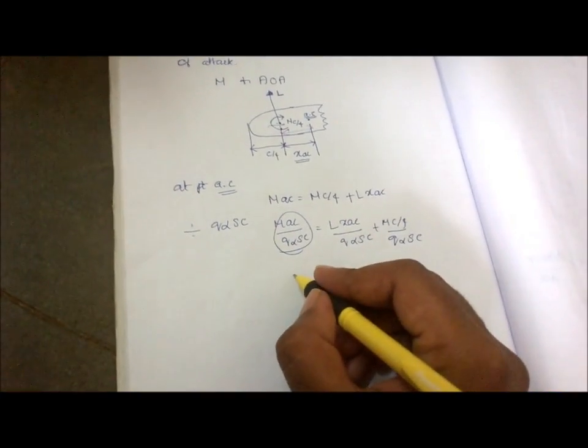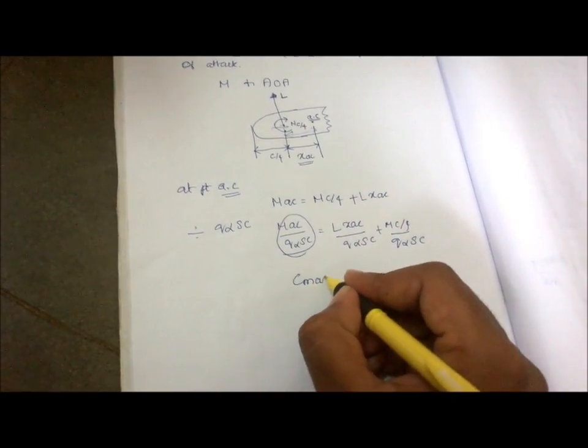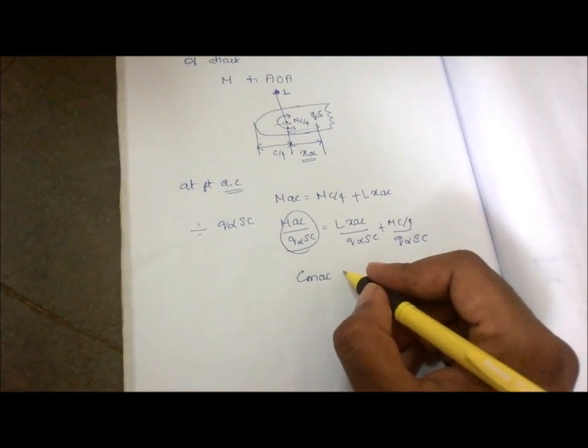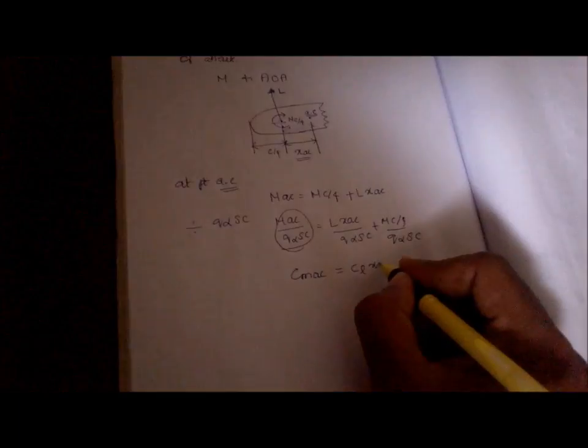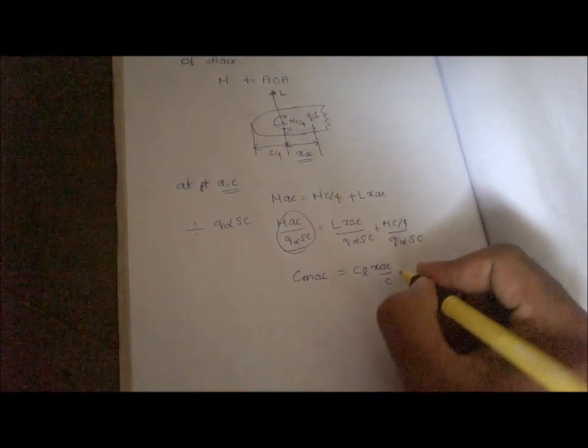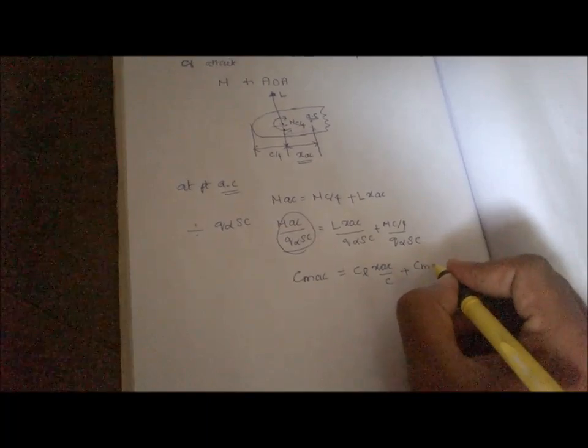This term can be written as coefficient of moment at the aerodynamic center which is equal to C_L times X_AC divided by C plus this is C_M_C/4.